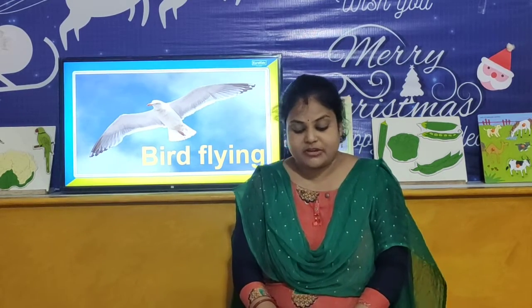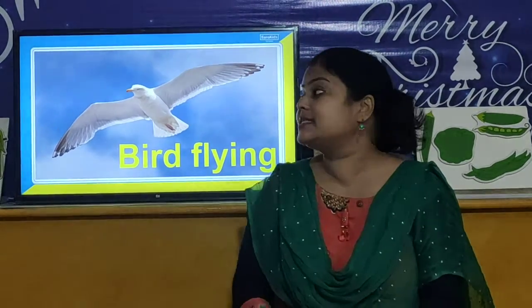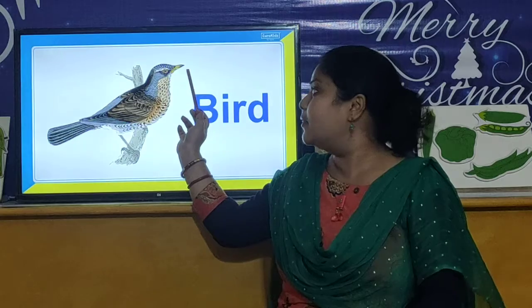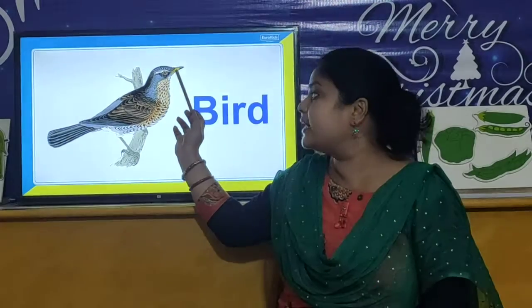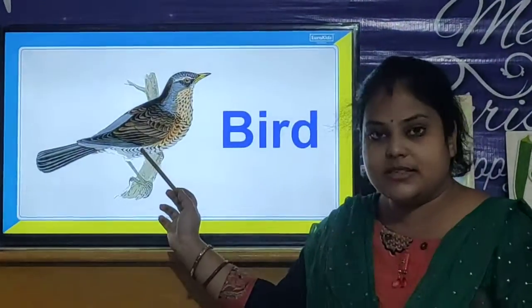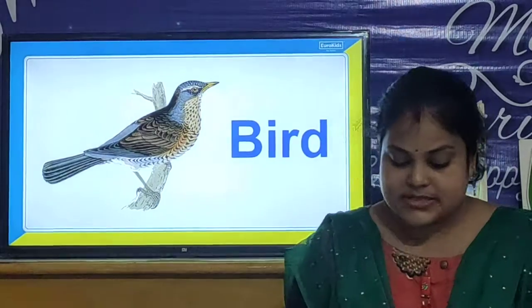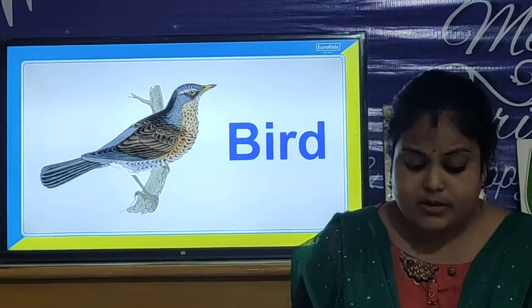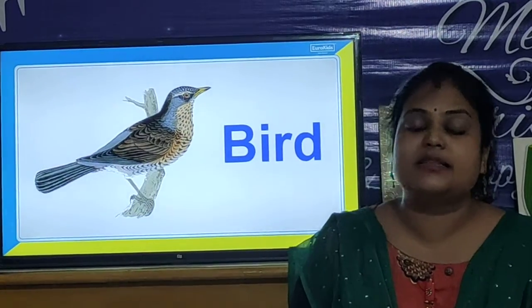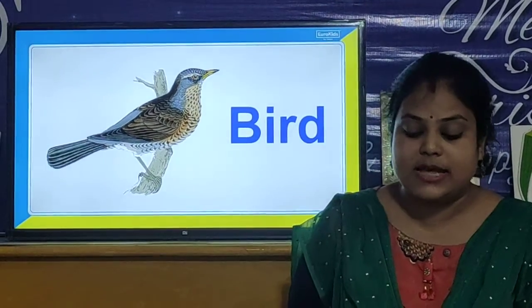So children, birds have feathers and beak, and two wings. These are the features of all the birds. What are the common features of all the birds? The bird has beak — all the birds have beak. And all the birds have feathers. And all the birds have two wings. These are the three features of all the birds.